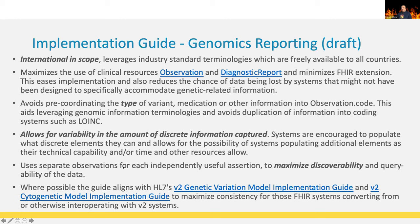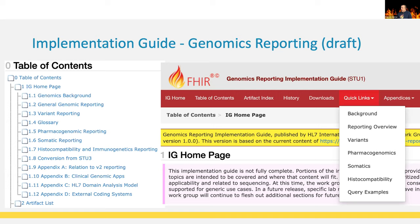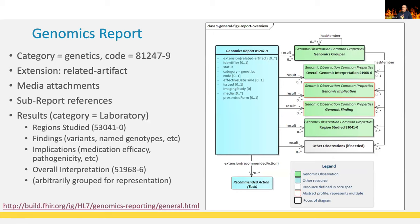By using separate observations, we achieve maximum discoverability and variability — you can query for implications, variants, and all this independently on your FHIR server. Where possible, we also aligned with the HL7 v2 Genetic Variation Model IG and the v2 Cytogenetic Model IG to foster interoperability between standards. Looking at the implementation guide start page, you have a table of contents as a great starting point with reading about genomic background, how to do genomic reporting, and variant reporting to help you get started.